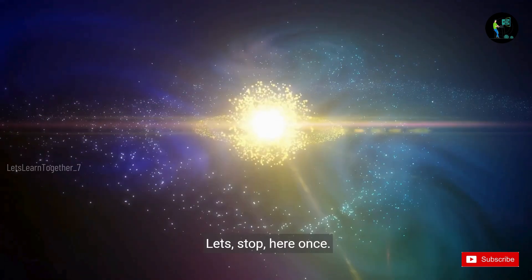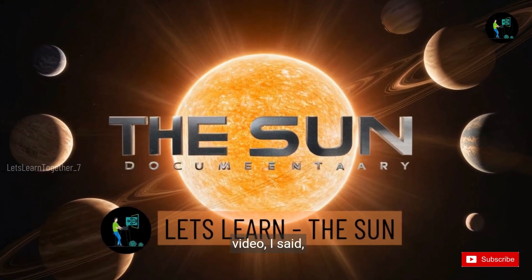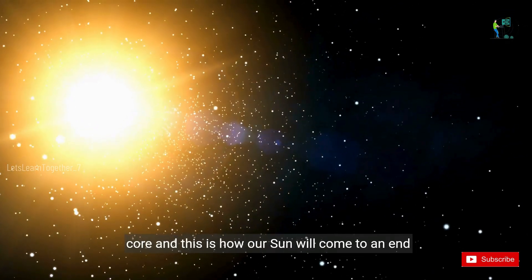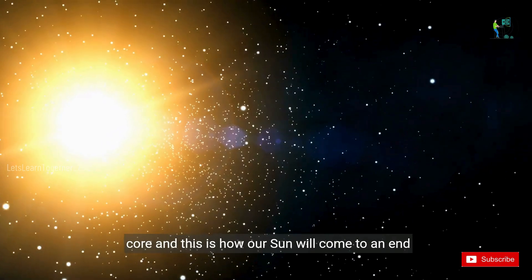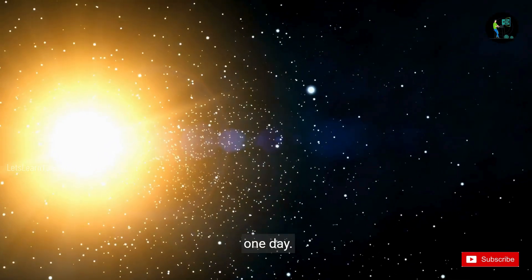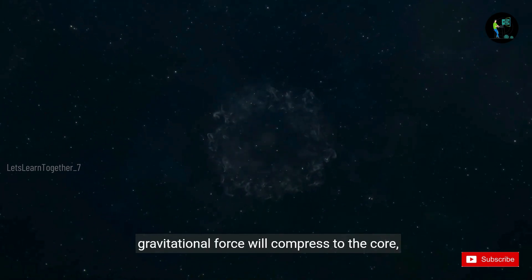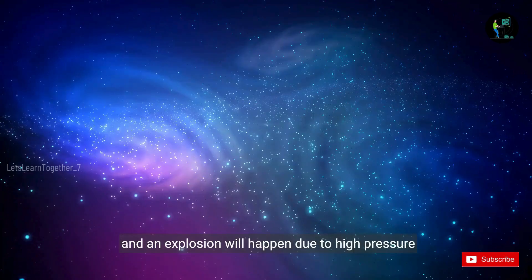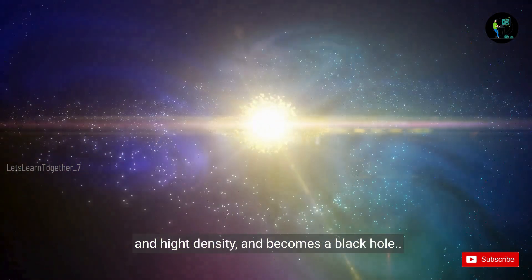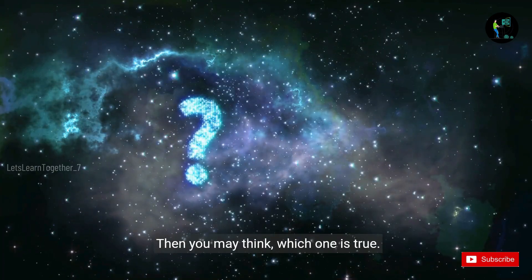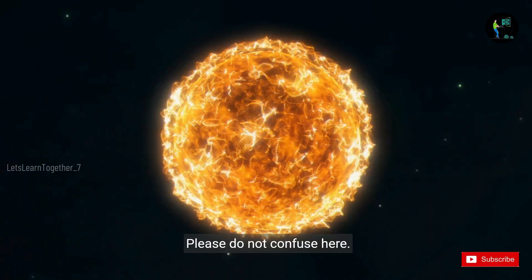All right, let's stop here once. You might get a doubt here. In the previous video, the sun documentary video, I said our sun will lose its gravity and expand from the core, and this is how our sun will come to an end one day. And in this video, I am saying that the star's gravitational force will compress to the core and an explosion will happen due to high pressure and high density and becomes a black hole. Then you may think, which one is true? Please do not confuse here.